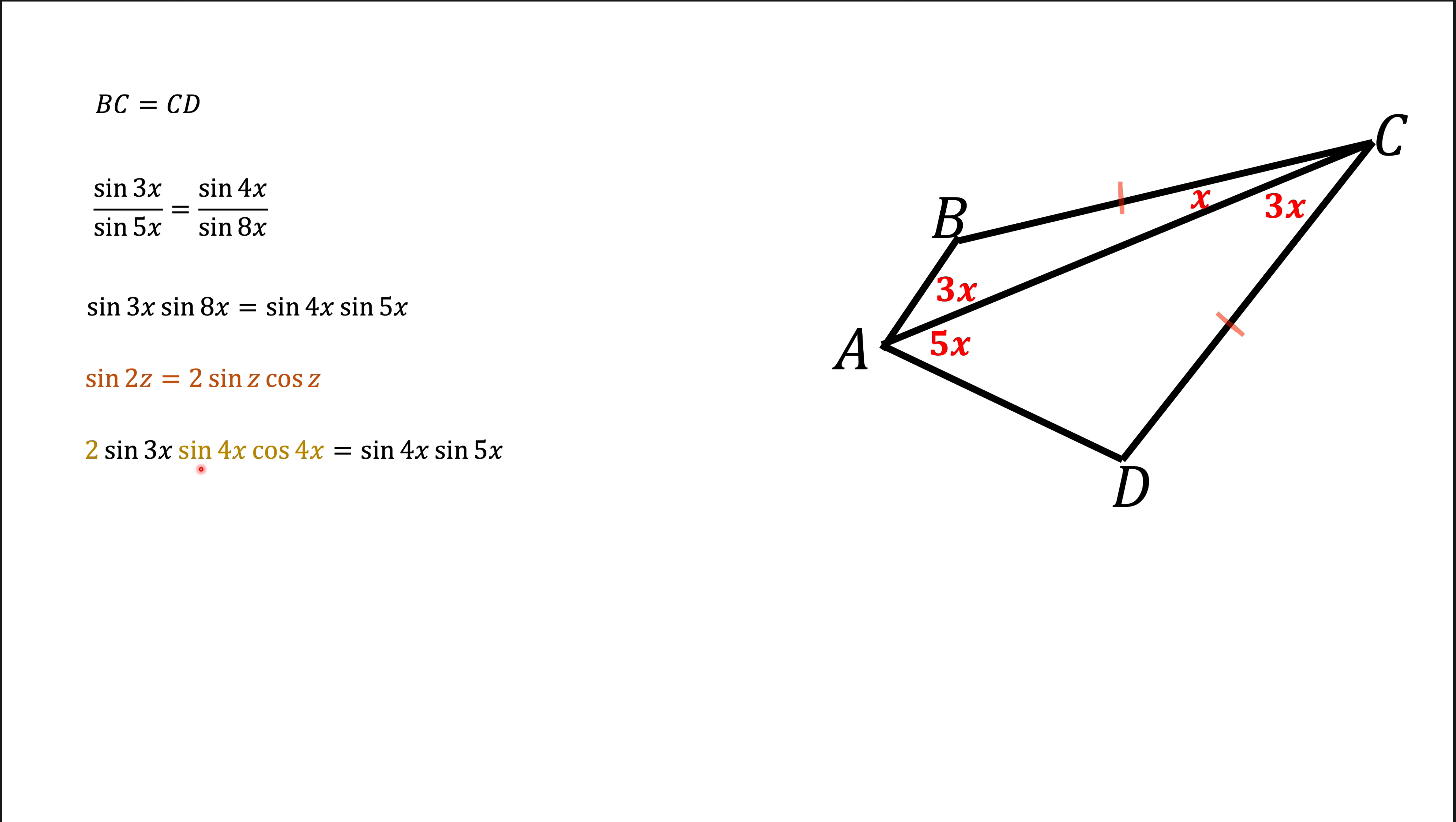Now we have sine of 4x on both sides which we can cancel out. We divide by sine of 4x, and we can do it because sine of 4x is not equal to 0. This is the simplified formula.